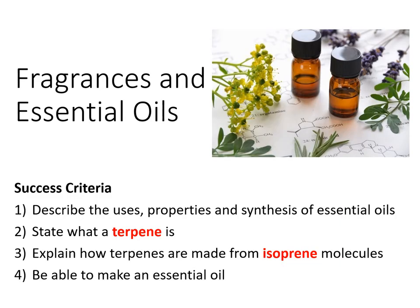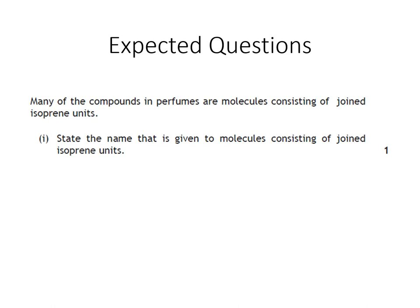Here's what we're going to be covering today. We're going to look at the uses, properties, and synthesis of something called essential oils — you may more than likely have some in your house. We're going to look at what a terpene is and drill down into the chemistry of these essential oils. We're going to explain how terpenes are made from isoprene molecules, and then go through the theory of how to make an essential oil. The sort of questions you can expect are shown here, so have a read and we'll go through the answer at the end.